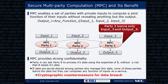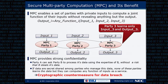This property is very strong and provides very strong confidentiality. For example, party A can ask party B to process party A's data using the expertise of party B, and we can do that without the risk that B steals A's data. Another example: if data are secretly shared among parties and those parties manage the data, none of them learn the data, but they can compute any function on it as a service.